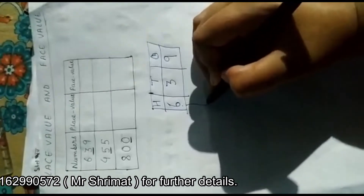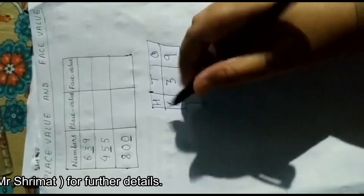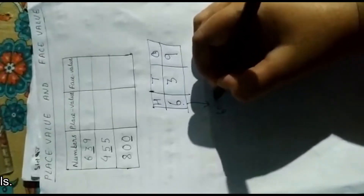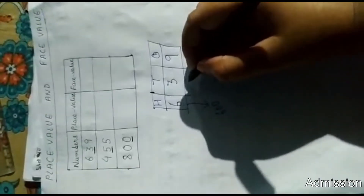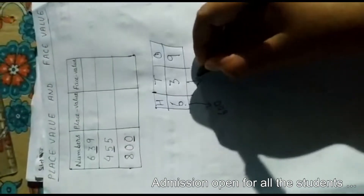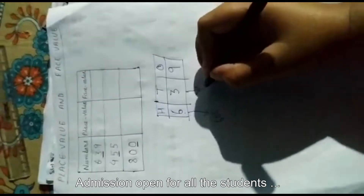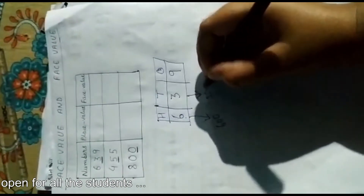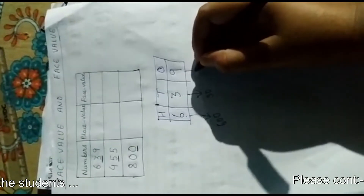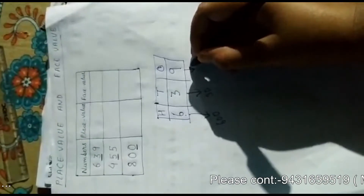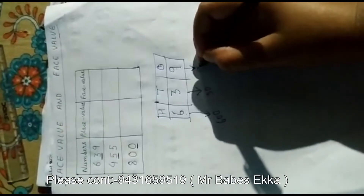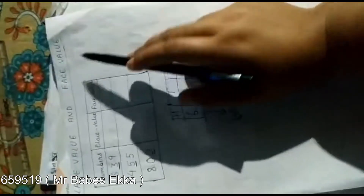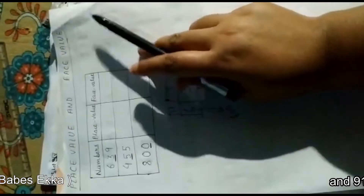For the number 639, the place value of six is six hundred. Three is at the tens place, so the place value of three is thirty. Nine is at the ones place, so the place value of nine is nine.